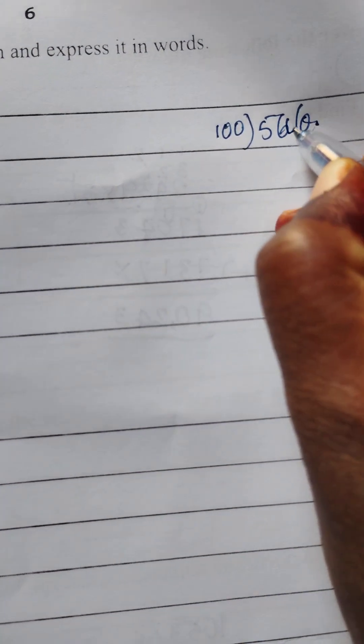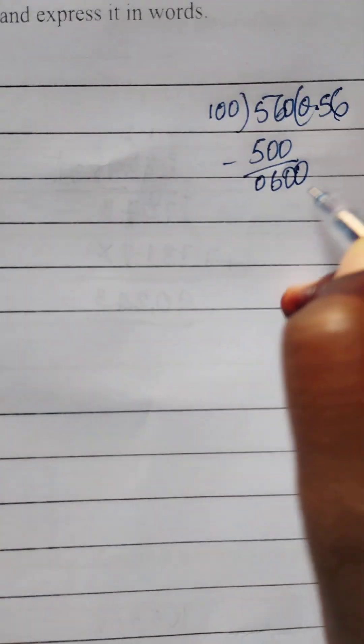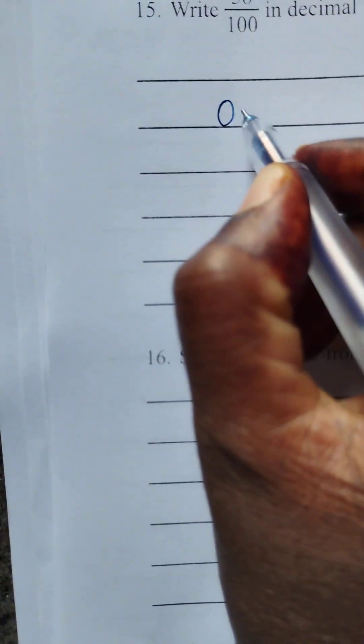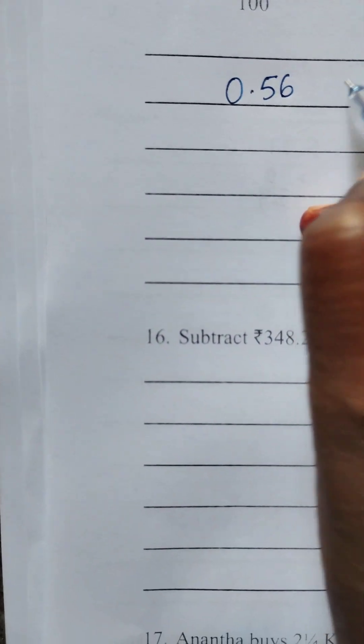56 divided by 100. 0. 500. Do the minus. 0. 6, 0. Already put a point. You can write 0. Now 100 sixes, 600. So answer is 0.56. This is decimal fraction.